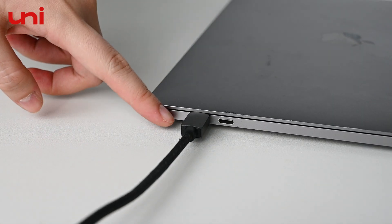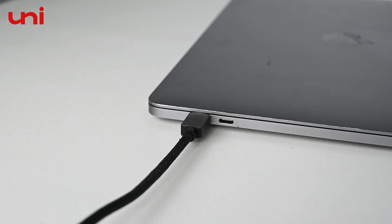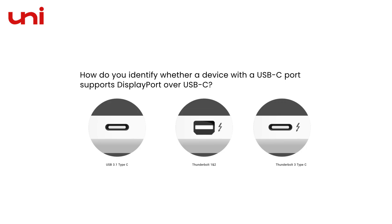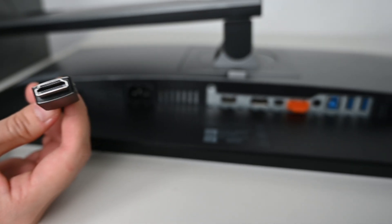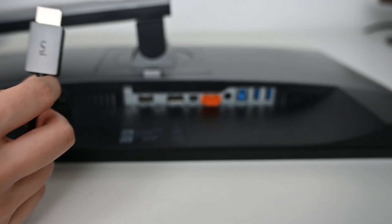DP-Alt mode, or alternate mode, is a feature in USB Type-C allowing for transmission of a video signal. Step 2: Connect the HDMI end to the display — plug it into the monitor or screen you want to display the video on.